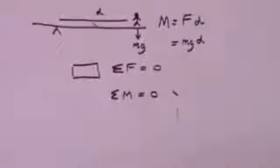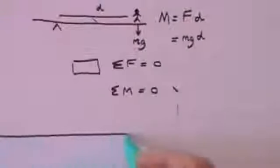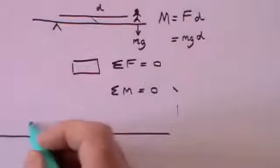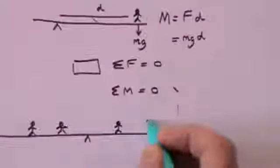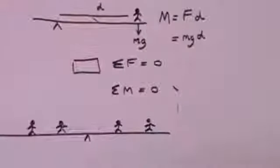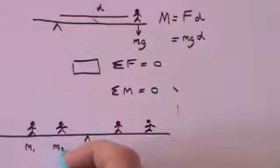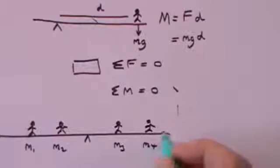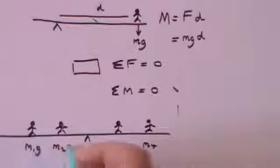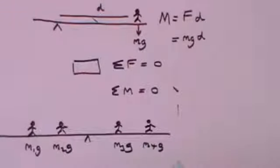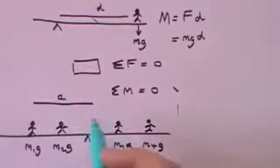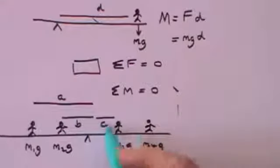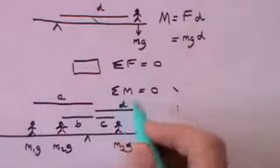And so we can come to the famous seesaw. Here is my seesaw, there's my balance point in the middle, and I'm going to put four people on the seesaw, and they're each going to have a different mass, and they're each a different distance away from the fulcrum. This person is mass m1, m2, m3, and m4. So consequently the forces acting down will in each case be the mass times g. And we're going to assume that the distance from the fulcrum of the first is a, the distance here is b, the distance here is c, and the distance here is d.